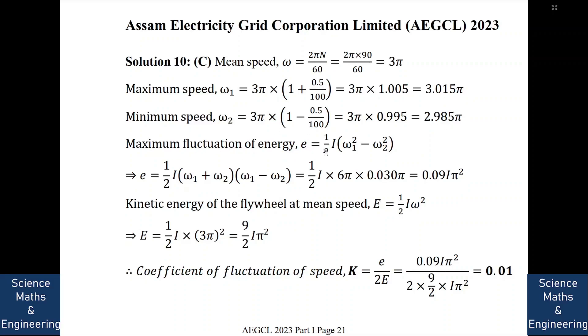Now, maximum speed would be 3 pi plus 0.5% more. So it is 3.015 pi and minimum speed would be 2.985 pi. Now, maximum fluctuation of energy that is small e would be equal to half of i into omega 1 square minus omega 2 square. So that is equal to 0.09 i into pi square. Now, kinetic energy of the flywheel at mean speed is capital E equal to half of i omega square. So that is 9 by 2 i pi square. Now, coefficient of fluctuation of speed that is k is equal to small e by 2 capital E. So it would be equal to 0.01.